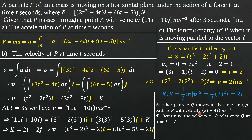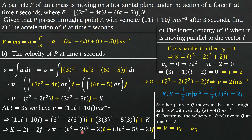Finally, another particle Q moves in the same straight path as P with velocity 3i + 4j meters per second. Part D asks us to determine the velocity of P relative to Q at time T = 2 seconds. The velocity of P relative to Q is the velocity of P minus the velocity of Q at T = 2 seconds. At T = 2, the velocity of P is 2i, as we already found since T = 2 satisfies the quadratic.